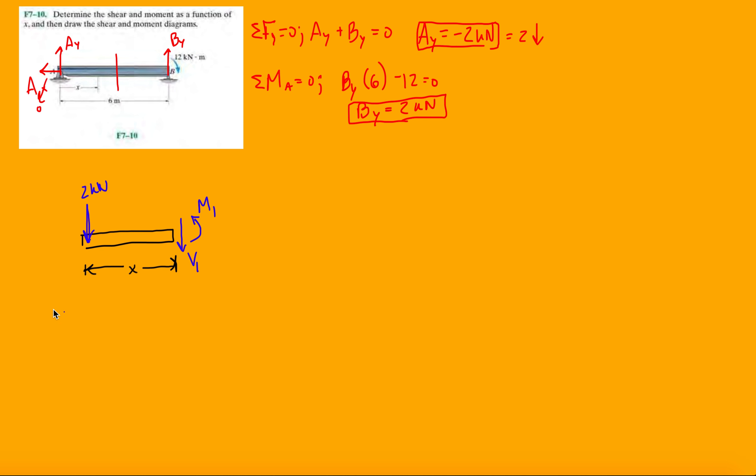So, then once we have this set up, just analyze it again. FY equals 0. We have minus 2 minus V1 equals 0. And then V1 equals negative 2 kilonewtons.